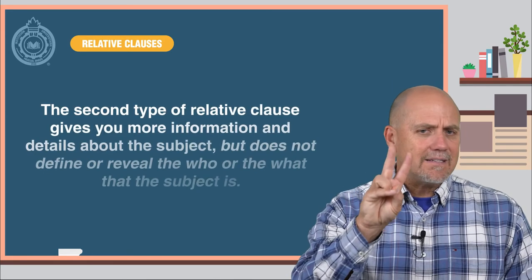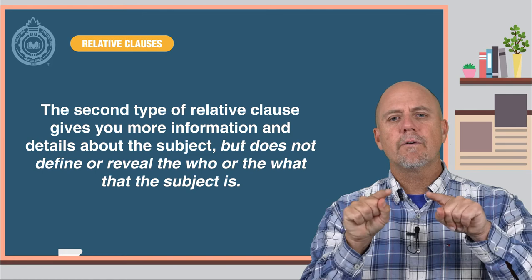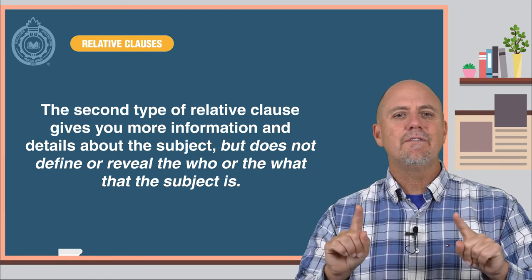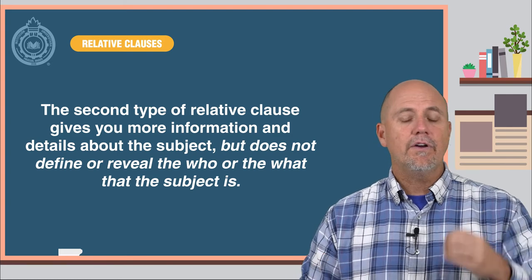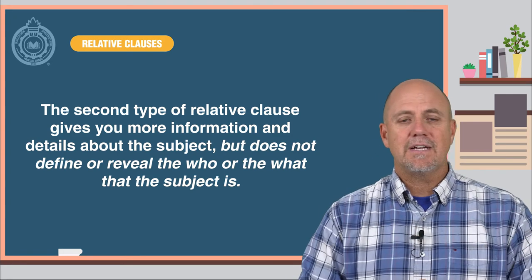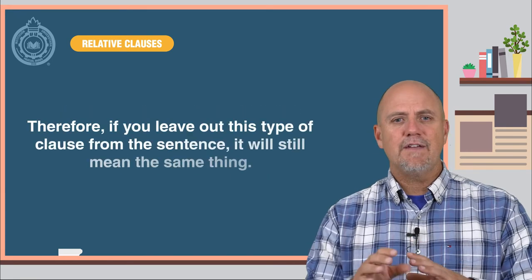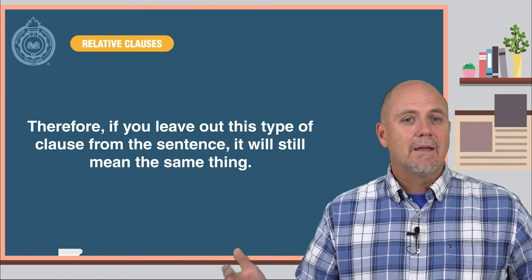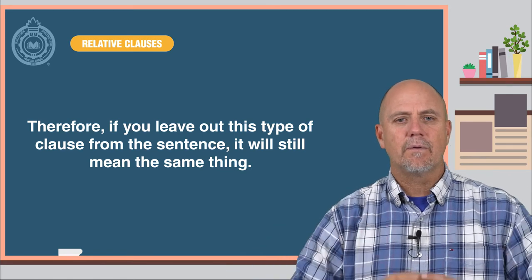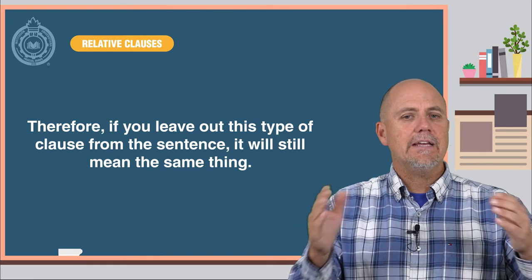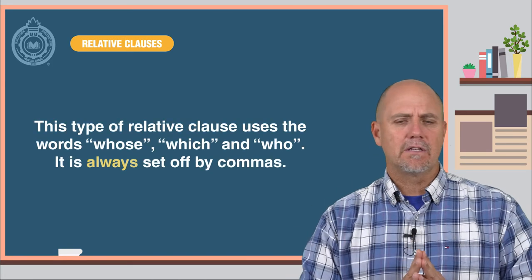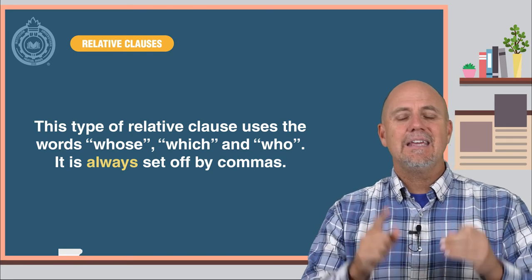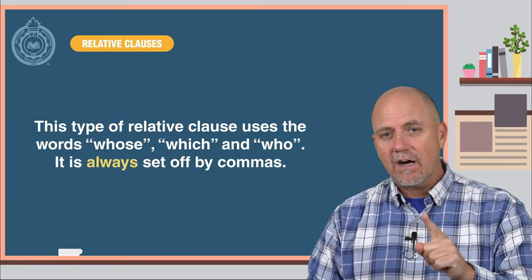The second type of relative clause gives you more information and details about the subject, but does not define or reveal the who or what that the subject is. Therefore, if you leave out this type of clause from the sentence, it will still mean the same thing. Basically, you are just adding additional information about a subject that is already known. This type of relative clause uses the words whose, which, and who. It is always set off by commas.